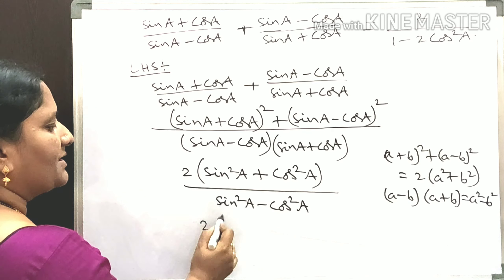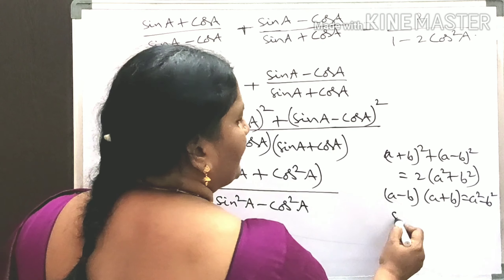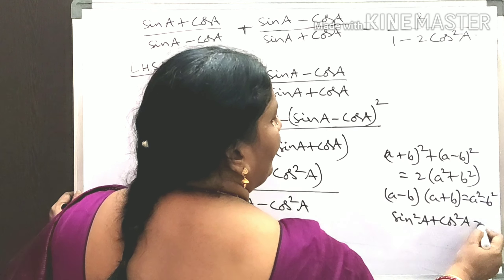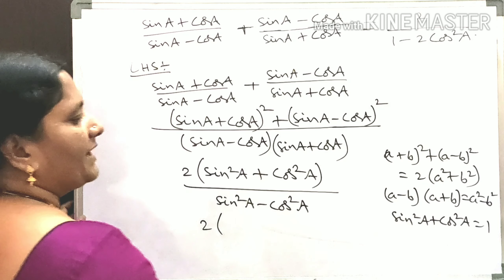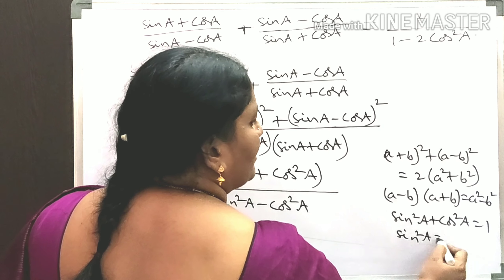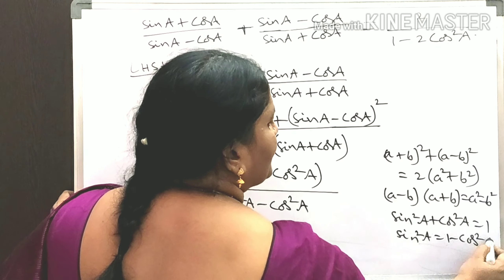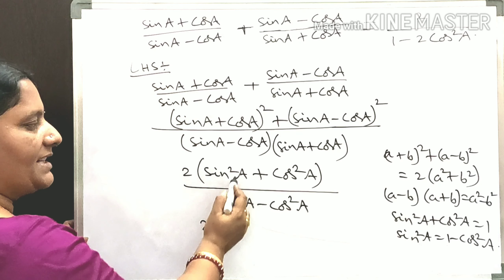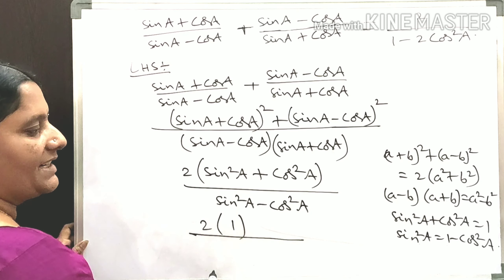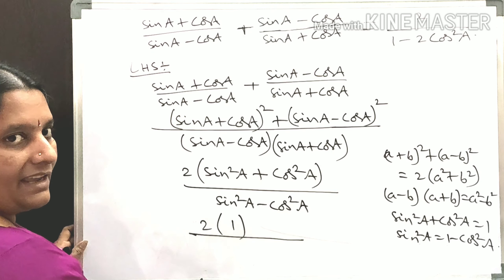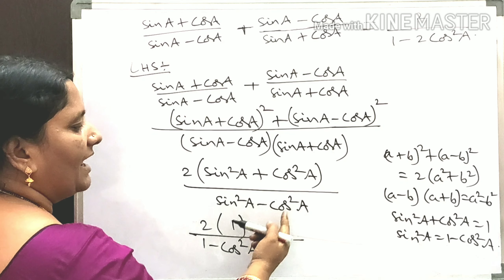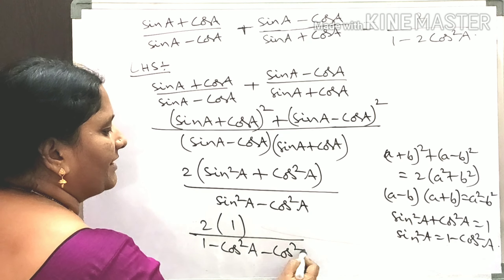For the numerator, applying the Pythagorean identity: sin²A + cos²A = 1. For the denominator, we write sin²A as 1 - cos²A, so sin²A - cos²A becomes 1 - cos²A - cos²A.